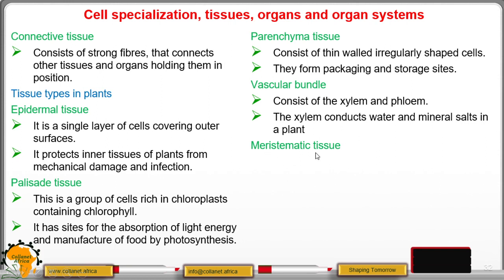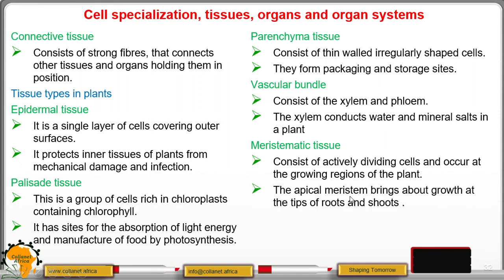The other part is the meristematic tissue and has actively dividing cells at growing regions of the plant. For example, the shoot tip and the root tips. Because of the actively dividing cells present at the apical meristem, growth is faster in the tips of roots and shoots.